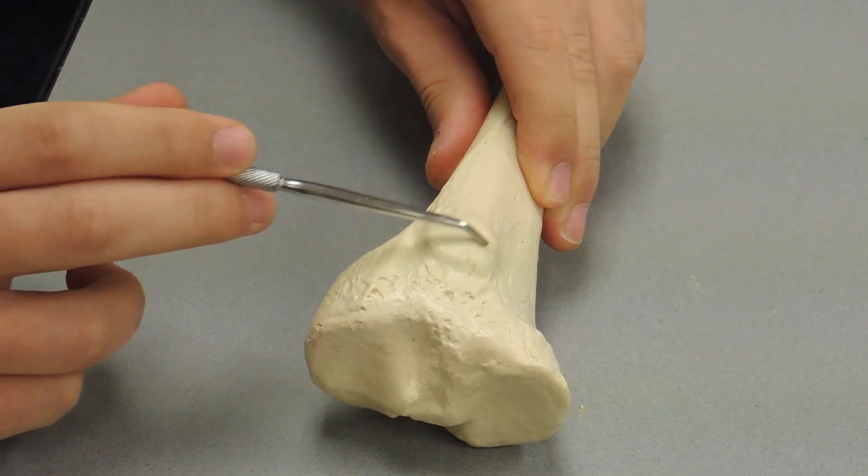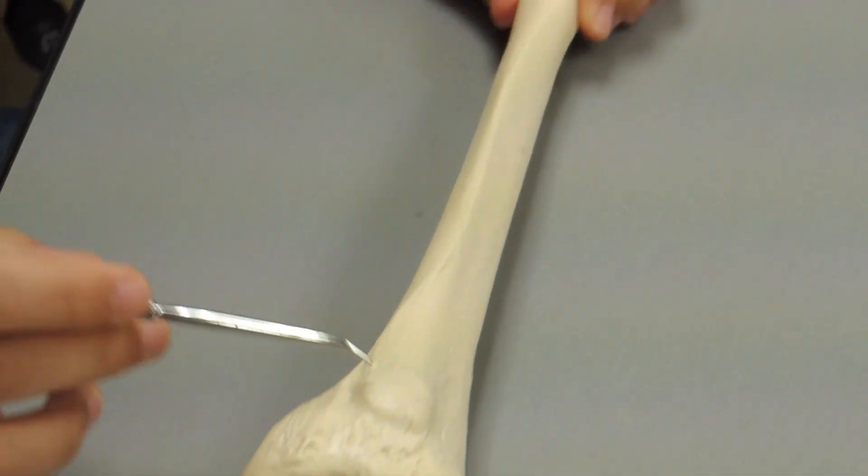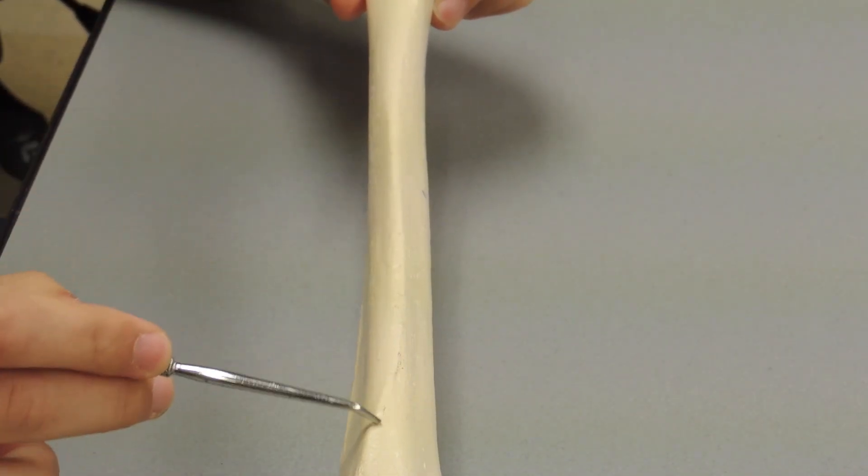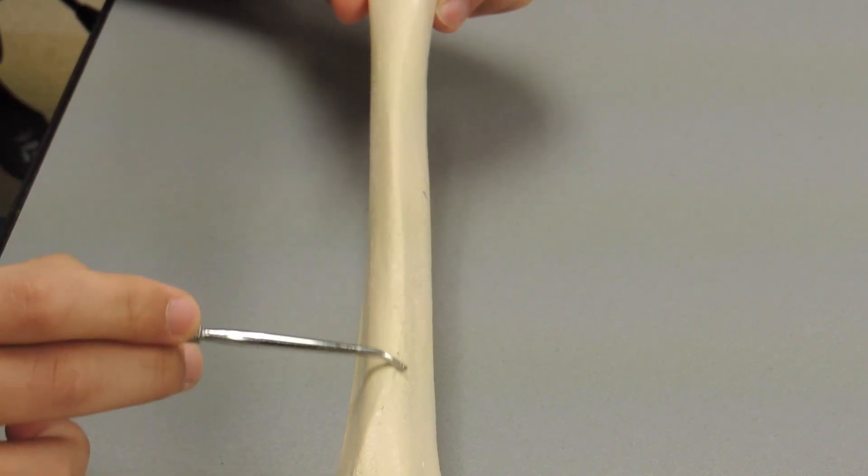Moving down right here, we have our tibial tuberosity. Further down, on the anterior side, you have your anterior crest, or your tibial anterior crest.